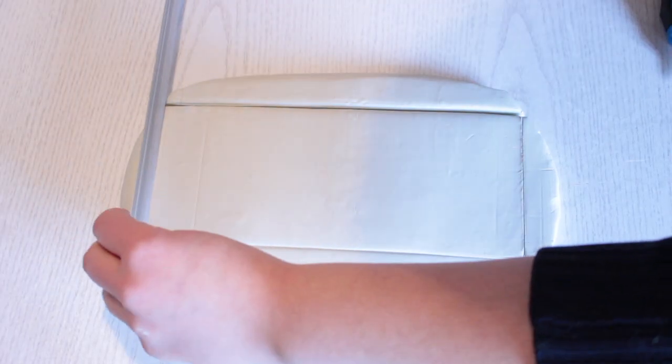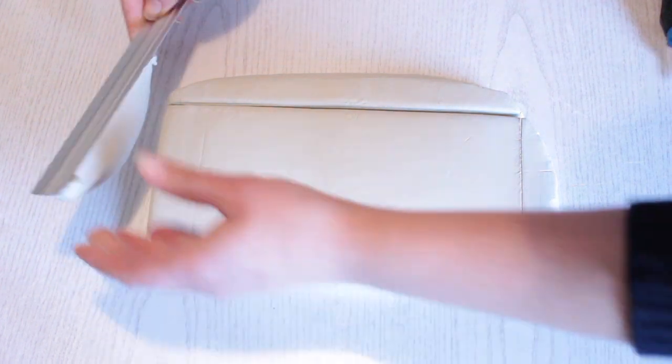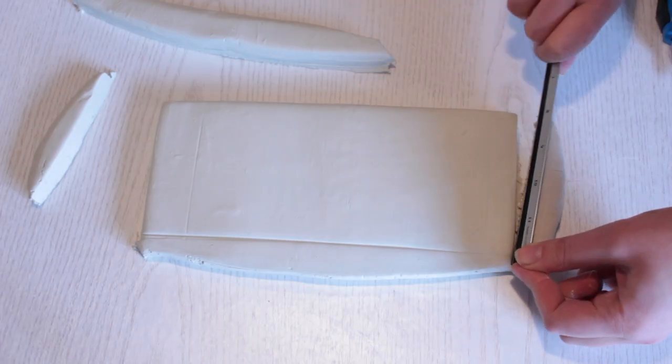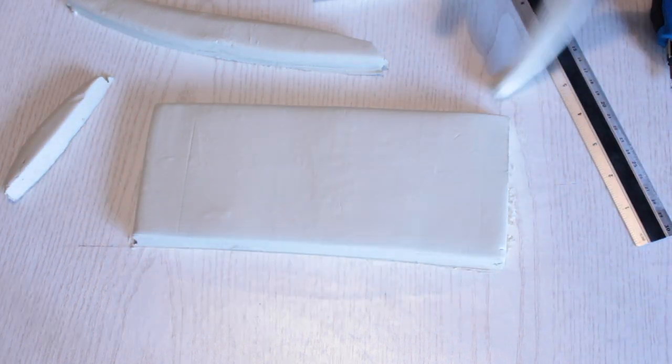Now to carve the sides out, you can either use your box cutter or you can just use your ruler. Now remove all of the excess bits on the sides until you're left with a perfect rectangular piece.